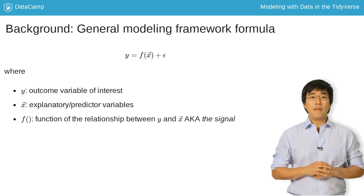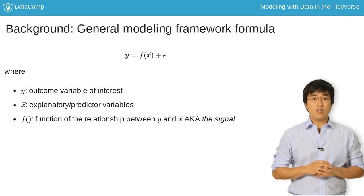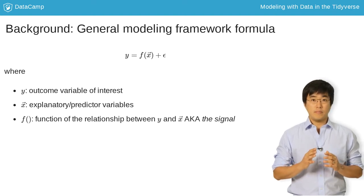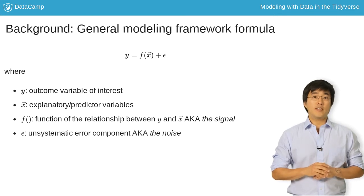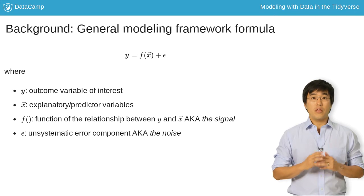F, a mathematical function making explicit the relationship between Y and X. F of X is also called the signal. And finally, epsilon, an unsystematic error component. Epsilon is also called the noise.